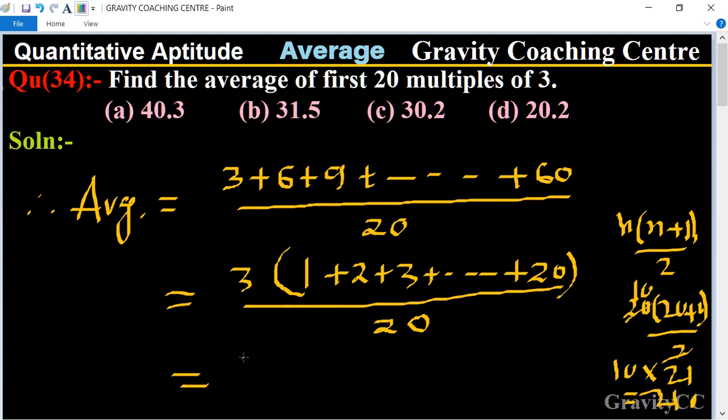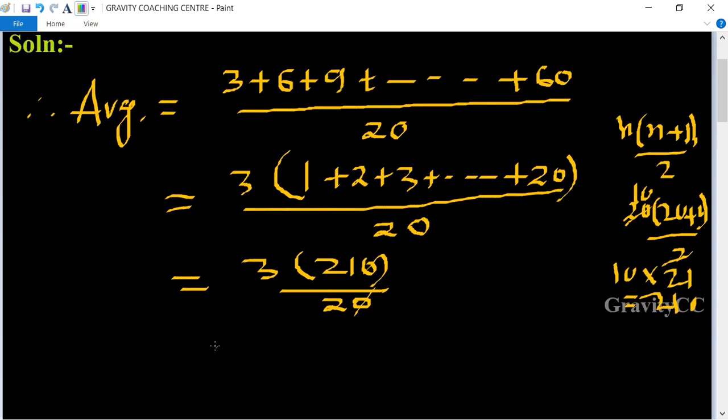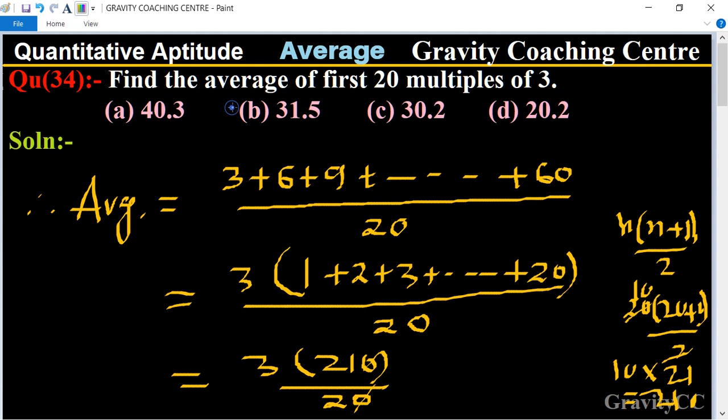Canceling the zeros, 21 times 3 is 63 divided by 2. After dividing, we get 31.5, which is the required answer. So option B is the correct answer.